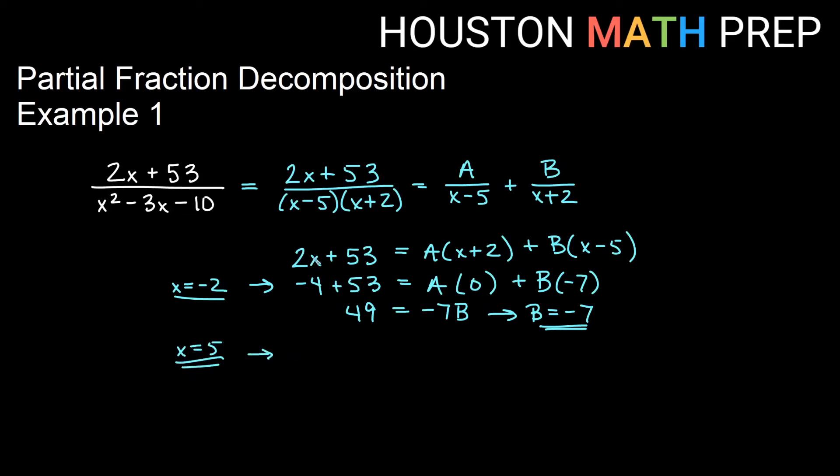And we'll go ahead and do that, so that would give us 2 times x would be 10 plus 53 equal to A times positive 7 here, plus B times 0, so our B goes away. Over here, we get 63, and we get 7A, so dividing both sides by 7 will give us that A equals 9.